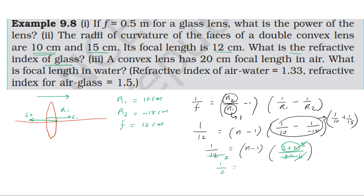Solving, 1/12 equals (n minus 1) into (1/10 plus 1/15), which simplifies to (n minus 1) times 1 by 6. This gives the refractive index of the glass of the double convex lens as 1.5.